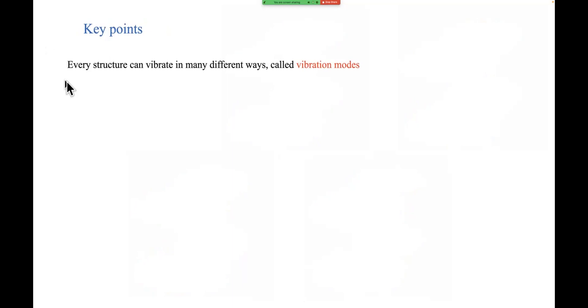So what do we learn from this? Well, just to repeat what I've said in the previous talk, every structure can vibrate in many different ways called vibration modes. Each mode has a resonant frequency and a mode shape. Now, the important thing we've seen here. Resonance frequencies of vibrating structures are almost never harmonics. Frequencies are almost never in whole number ratios. The vibrating string is the exception to that. Even a real string is not exactly harmonic, but it's close to it.